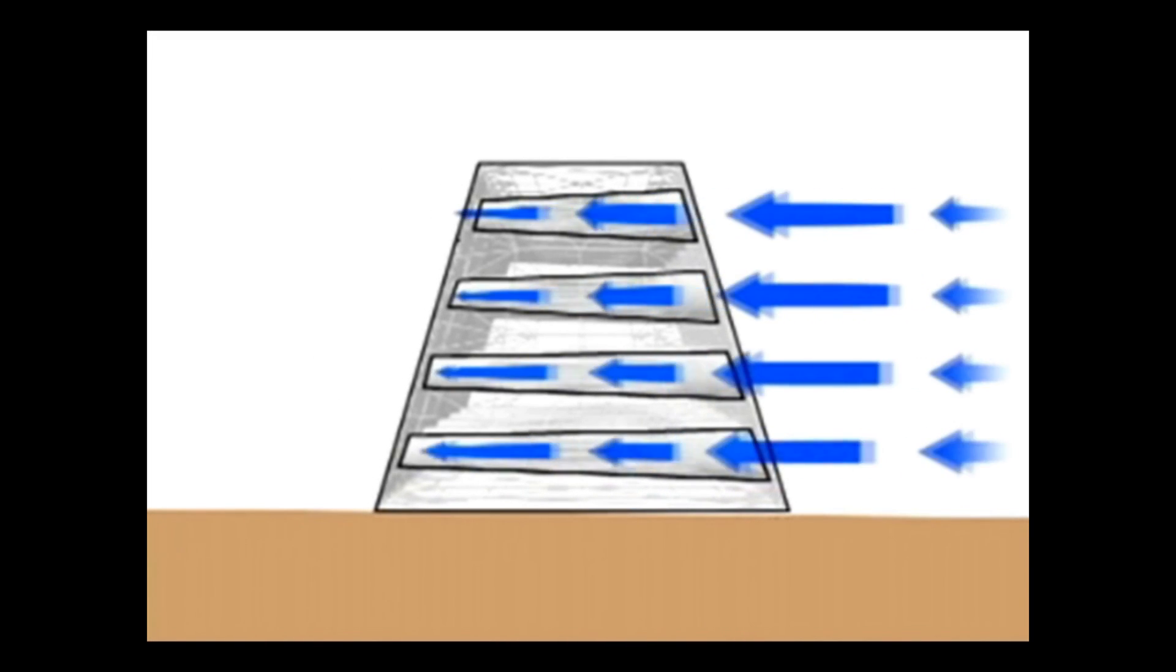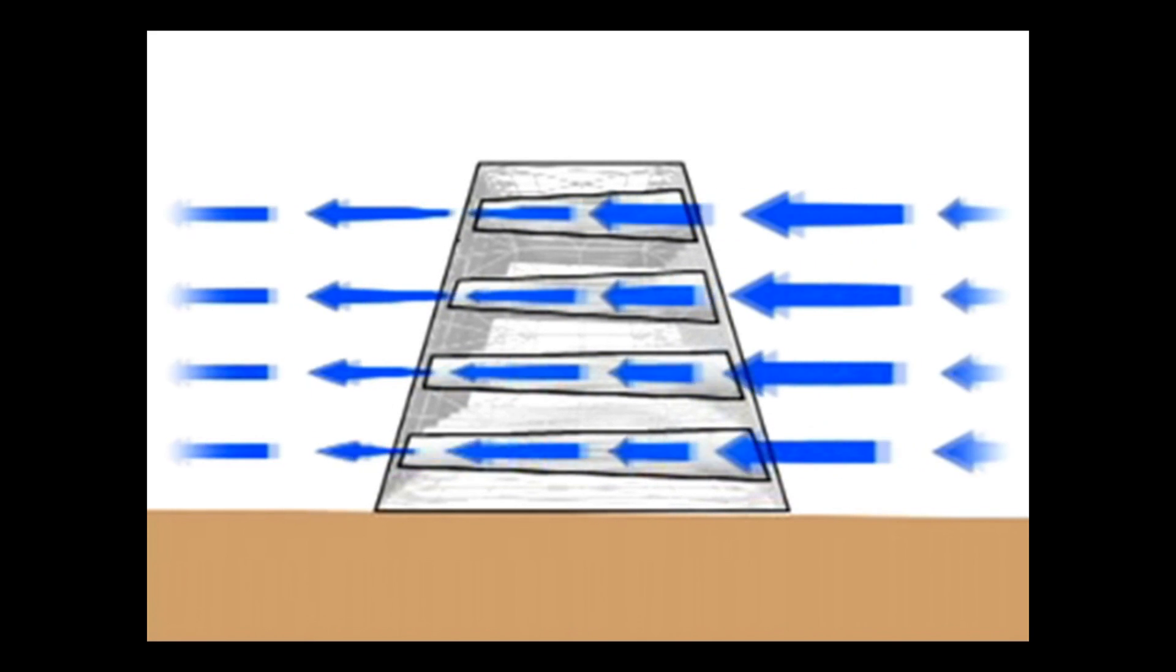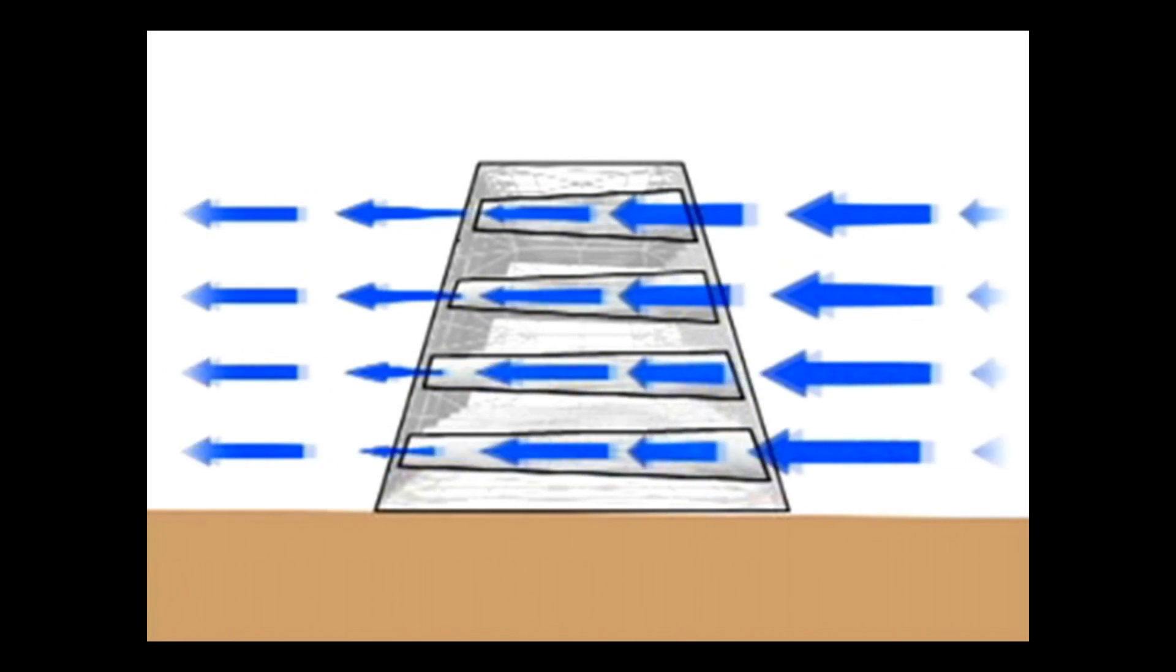Sand Saver works by putting the waves to work. Conical holes in the unit allow water to travel through as the wave breaks toward the shore.